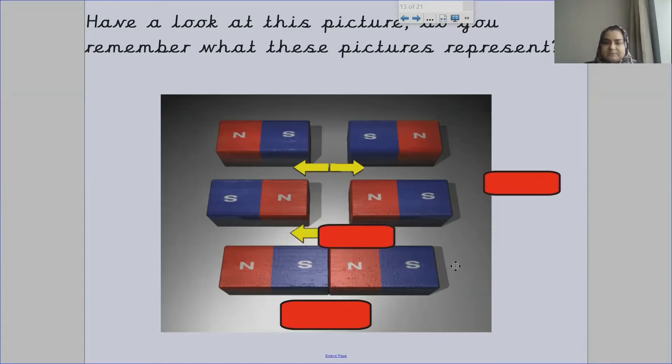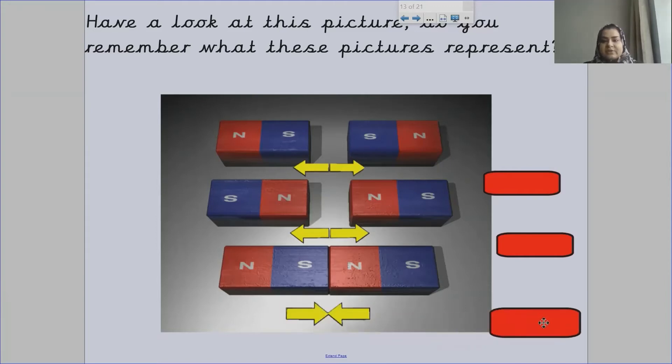Then what about this picture? Fantastic. So they're pushing away from each other as well. The north and the north. So the two north sides are repelling. And then the south and the north are pulling towards each other, which means they are attracting.